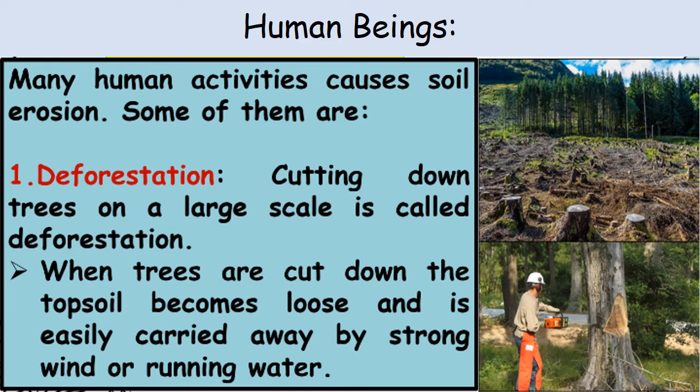Human Beings. Many human activities cause soil erosion. 1. Deforestation — cutting down trees on a large scale is called deforestation. When trees are cut down, the topsoil becomes loose and is easily carried away by strong wind or running water.